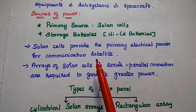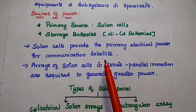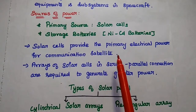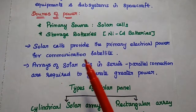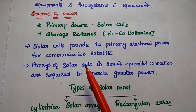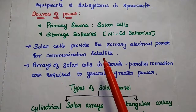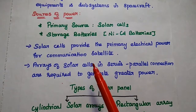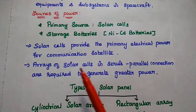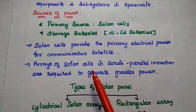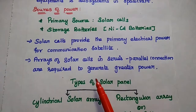Solar cells provide the primary electrical power to all the equipments in the satellite system. Individual cells can produce only a small amount of electrical power. In order to generate greater electrical power, arrays of solar cells in series-parallel connection are used.